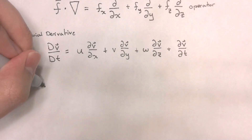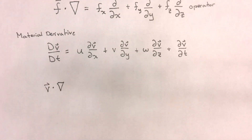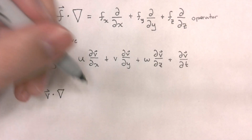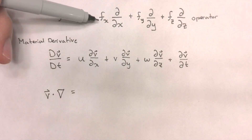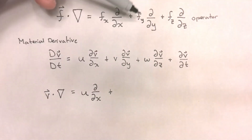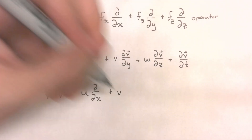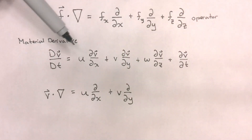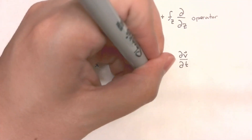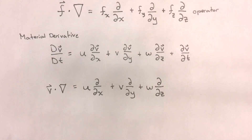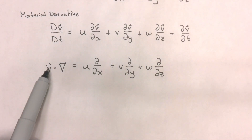Following the definition already presented, v dot del equals the x component of vector v — which we call u — multiplied by a partial change with respect to x, plus the y component — which we call v — multiplied by a partial change with respect to y, plus the z component — which we call w — multiplied by a partial change with respect to z. This is the new operator formed by combining the velocity vector and the del operator.